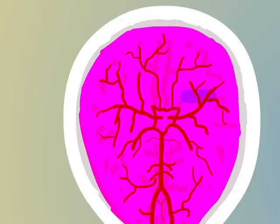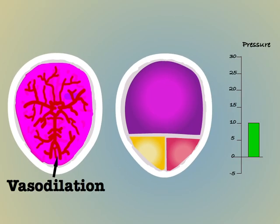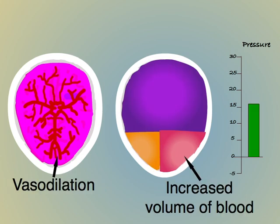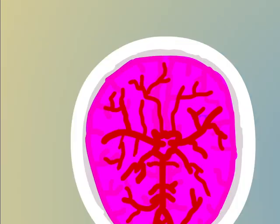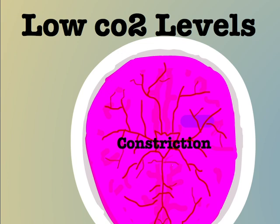Blood vessels in the brain are also affected by CO2. In the presence of high levels of carbon dioxide they dilate, letting more blood into the brain. This increased volume of blood will lead to increased intracranial pressures. Conversely, blood vessels respond to lower levels of carbon dioxide by constricting.